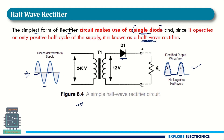The circuit uses a single diode and a load resistor RL, across which the output V-naught is measured. A 240-volt AC input is applied to the primary coil of a transformer, which is coupled to the secondary coil. This transformer steps down the 240-volt input to 12 volts by choosing the number of turns in the primary and secondary coils appropriately.